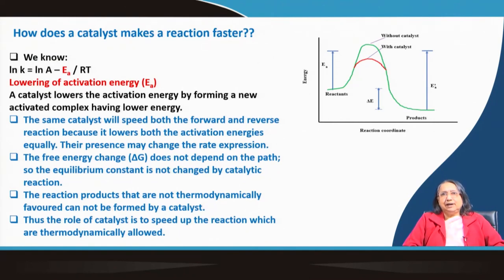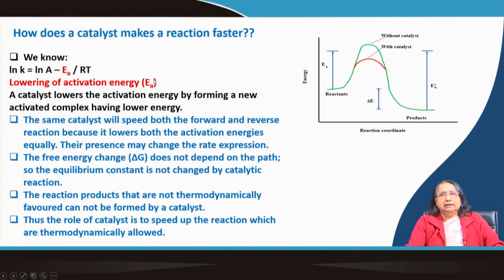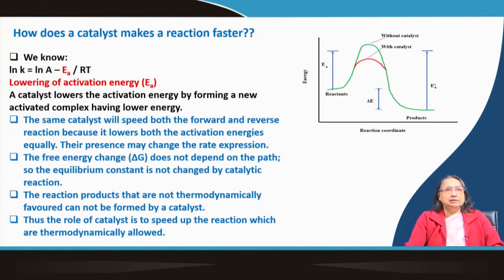How does a catalyst make a reaction faster? The catalyst provides an alternative route. Looking at the Arrhenius equation discussed in module 3, the activation energy E_a is lowered in a catalytic process. The position of the reactant and product remain the same, but without a catalyst the reaction goes via a high-energy pathway, while with a catalyst it takes a lower-energy pathway — so activation energy is reduced and the reaction becomes faster.